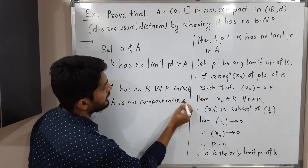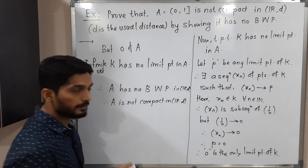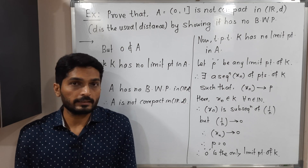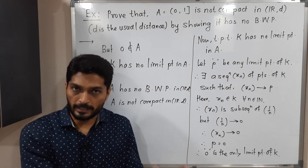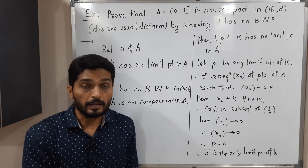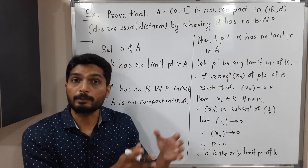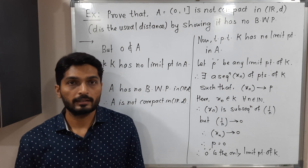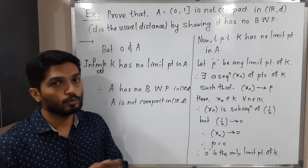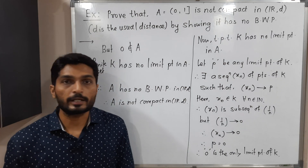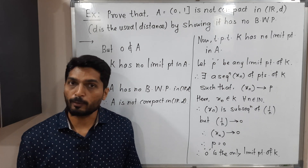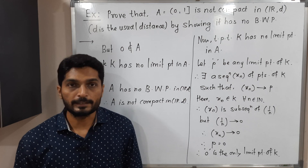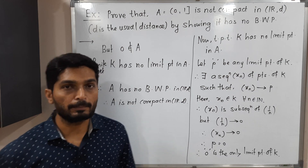Let us recall the result again: if you have a compact set, then it has BWP, and if you have a set with BWP, then it is compact. Since A has no BWP, it cannot be compact. In this way, we completed this example.